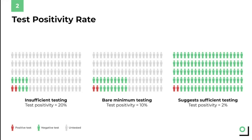So why does any of this matter? As you can see from this illustration, in the first scenario the test positivity rate is really high because not many people are being tested. On the other hand, in the third scenario the test positivity rate is fairly low, at two percent, because every single person in the community was tested. We look at the test positivity rate for states and counties to understand how much testing is really going on. If a state has a really high test positivity rate, then it's an indication that there isn't a ton of testing happening in the first place.